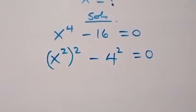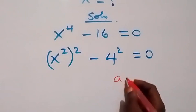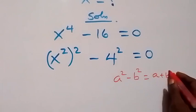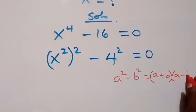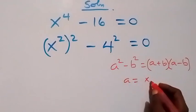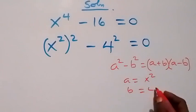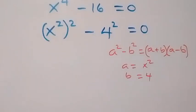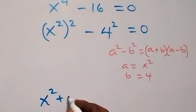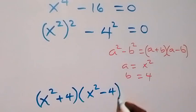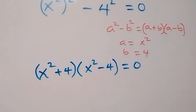From here, when we have something like a squared minus b squared, we can write it as (a + b) multiplied by (a - b). What is serving as a here is x squared, and what is serving as b here is 4. So what we have can be written as x squared plus 4, multiplied by x squared minus 4, equals zero.